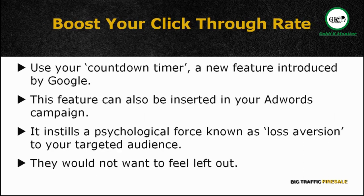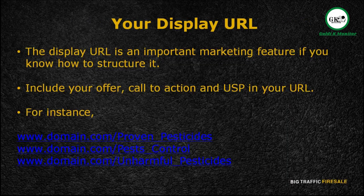Another powerful tool to boost your click-through rate is the countdown timer, a current feature introduced by Google. This feature installs a psychological force known as loss aversion in your prospects. Sometimes people are motivated by the idea of not wanting to be left behind rather than the idea of gaining something new. By adding an end date to your offer and including a real-life countdown on your ad, you'll inject a fear of loss in your prospects, giving you an edge over competitors. The display URL is also an important marketing feature — instead of just copying your domain name, include your offer, call to action, or even your USP to make your URL unforgettable.